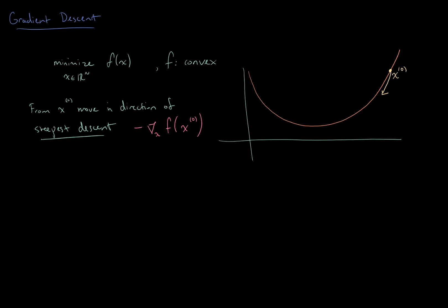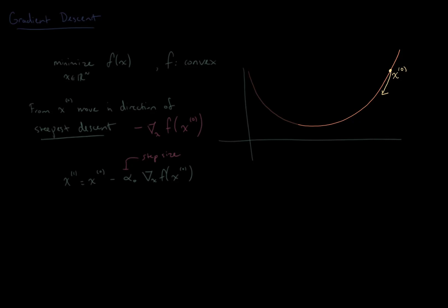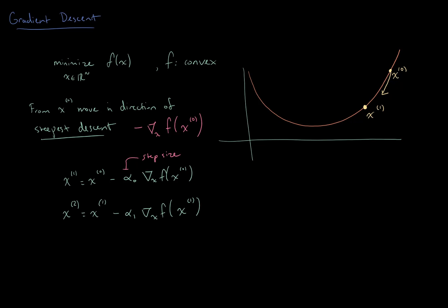So we form x1 by taking x naught and moving in the direction of the negative gradient, multiplied by a step size alpha naught. In this 1D example, the slope is positive, so taking a step in the direction of the negative gradient moves us backwards, and we arrive at x1. Then we just repeat this process: form x2 by taking x1 and taking a step in the direction of the negative gradient evaluated at x1. We repeat this process iteratively until we arrive at some sort of convergence.